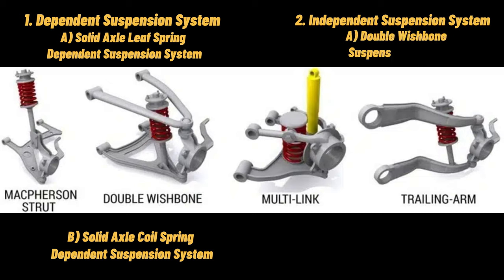Types of independent front suspension systems. A. Double wishbone suspension system. In construction, the wheel is mounted on the wheel hub. The wheel hub is provided with two links — one is an upper link, and the other is a lower link. Both the links are pivoted with the frame of the vehicle. A shock absorber is also placed between the frame and the lower link, which consists of a flexible joint. When the vehicle moves on uneven surfaces, its wheel faces shocks; these shocks are transferred to the shock absorber through the lower link. The shock absorber absorbs the maximum amount of shock. The upper link is used to maintain the camber of the wheel. This system is complex as well as costly, and it requires more space.